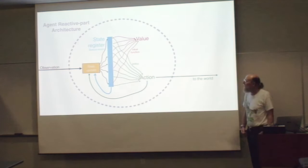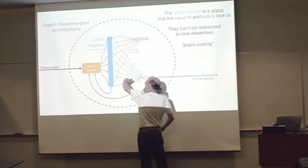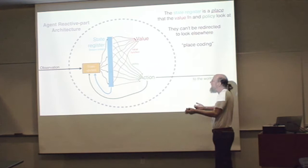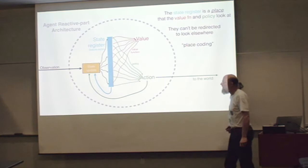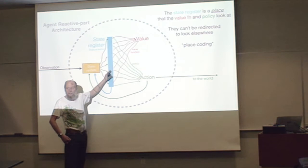This is the state register. It's a place. If you think of this mechanistically, it's a place. All these wires are going into it. The wires that constitute the value function or the policy, they can't be redirected elsewhere. It's like place coding. In neuroscience, they call it place coding - the meaning of a signal depends on what wire it's on, its place.